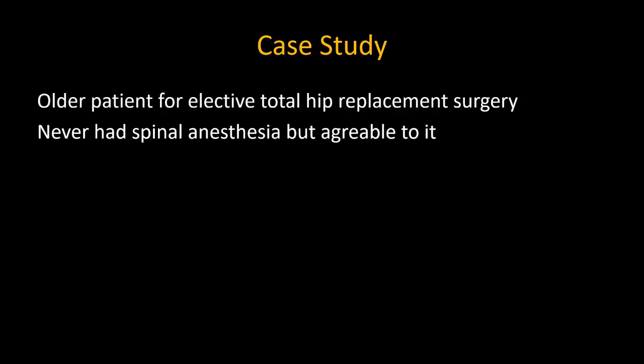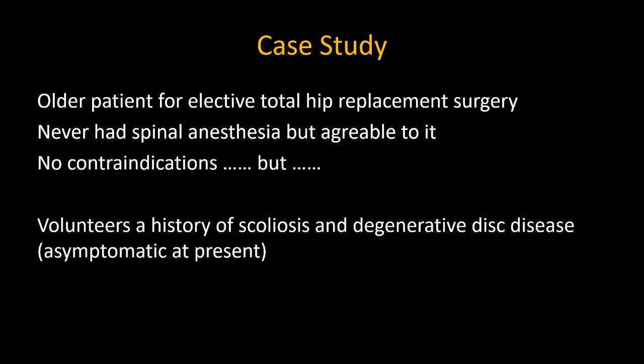The case in question was an older gentleman undergoing elective total hip replacement surgery with a plan for spinal anesthesia. He had never had a spinal before and had no overt contraindications to one. On history taking, he mentioned that he had a scoliotic spine and degenerative disc disease, although he was presently asymptomatic and had been told that no surgical intervention was required at this stage.